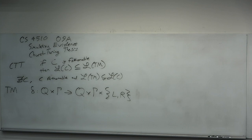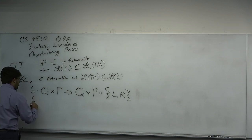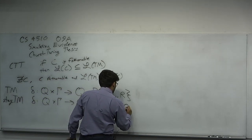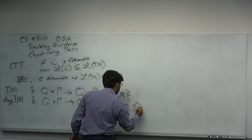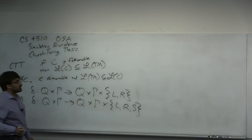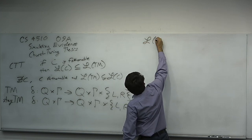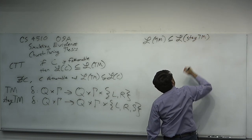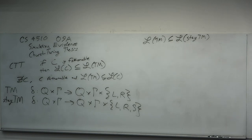The first question you may have is: what about staying still? What if I don't want to move left or right? So we define a model called the Stay Turing machine, which is identical to a Turing machine except it is allowed to now stay put — it can move left, move right, or now stay. Obviously, this is a generalization of a Turing machine, and every Turing machine can be simulated by a Stay Turing machine. Let L-stay-TM be the class of languages decidable by a Turing machine that has an additional stay instruction.